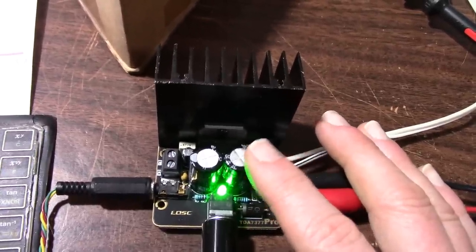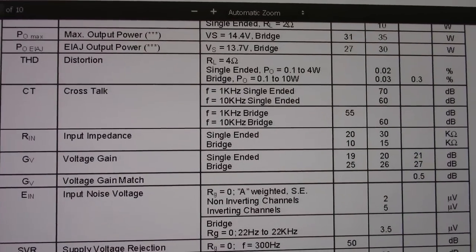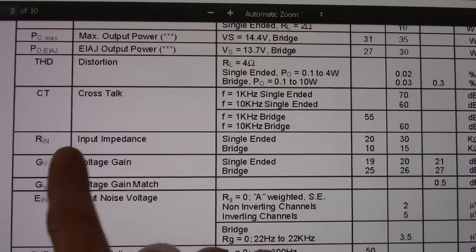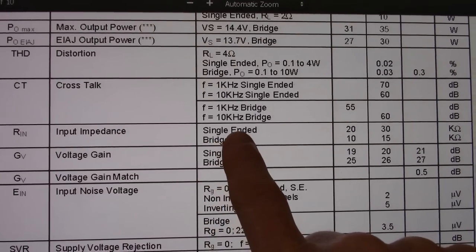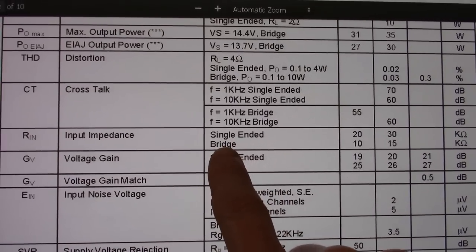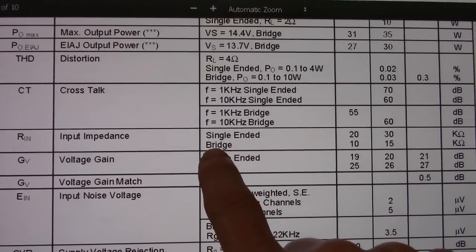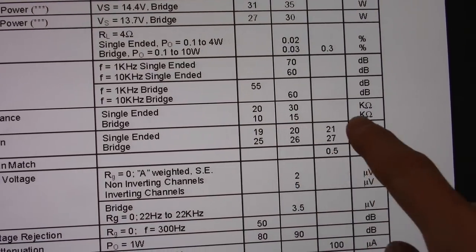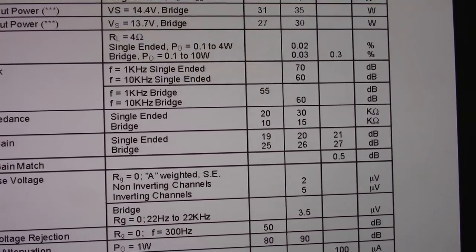So I can go to the datasheet. Most chip amps will have that on the datasheet. So here is the TDA 7377 datasheet. And there it is, input impedance. Now this amplifier is operating in bridged mode on that board. So the typical input impedance is 15 kiloohms.